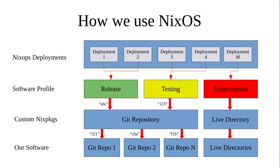The experimental branch points to a live directory for the custom Nix packages, which in turn points to the live directories of our software. This allows us to make changes on our development systems and test them on experimental systems without having to commit them to the repositories. Once we're satisfied that the experimental version works properly, we commit the changes and bump the git hashes to move experimental down to testing and testing down into release.